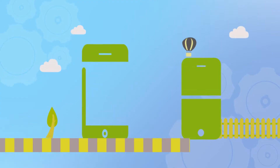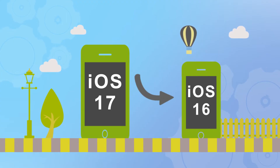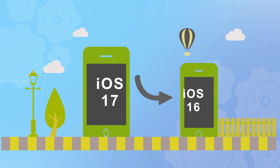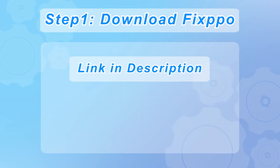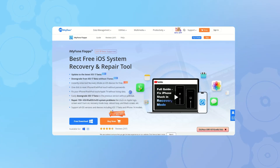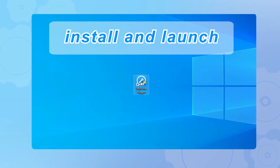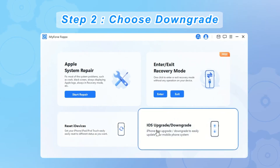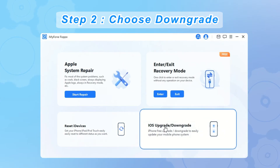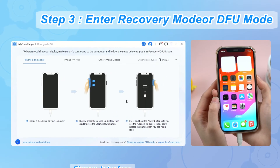Now I will introduce you in detail how to use iMyPhone Fixbow to downgrade iOS 17 to iOS 16 step by step. Step one: click the short link in the description of this video to go to the official website of iMyPhone, download Fixbow on your computer, then install and launch the program. Step two: choose the option to downgrade the iOS system while retaining the device's data.